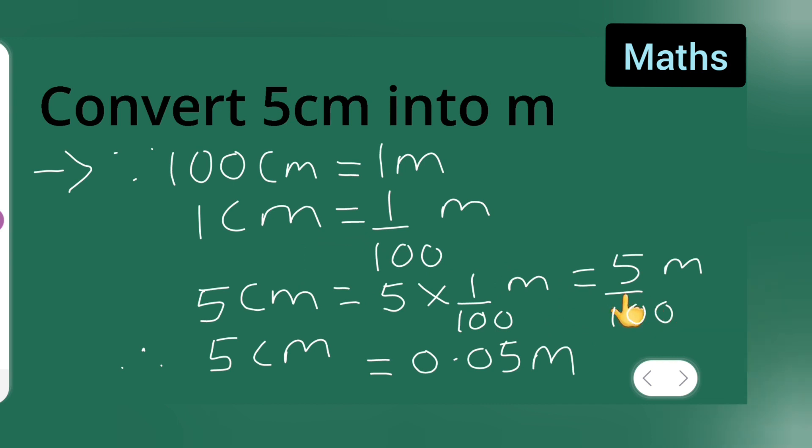So here there are two zeros, so place the value, place the point near two: 0, 1. The decimal point will come on the second place: 1 and 2. So I hope you have understood how to convert this 5 centimeter into meter. Thanks for watching.